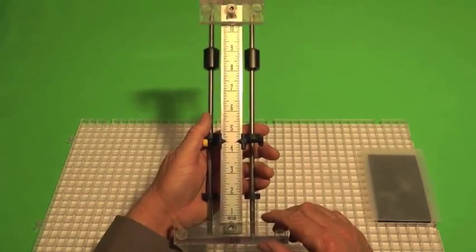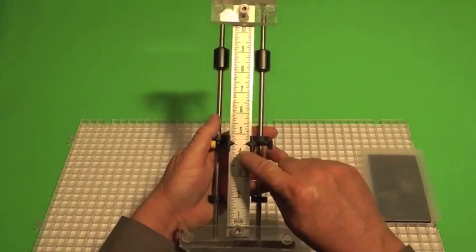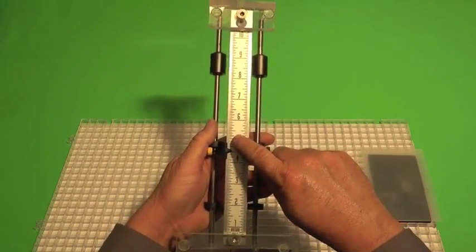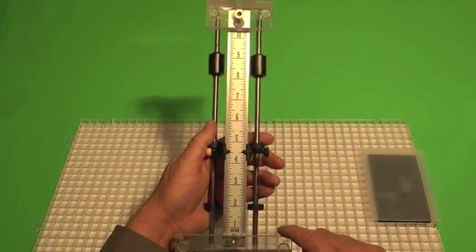If you wanted to do consecutive rings on a bottle, you could set it at any one number, then move it to the next number and make your score, and then move it to the next number and make your score.